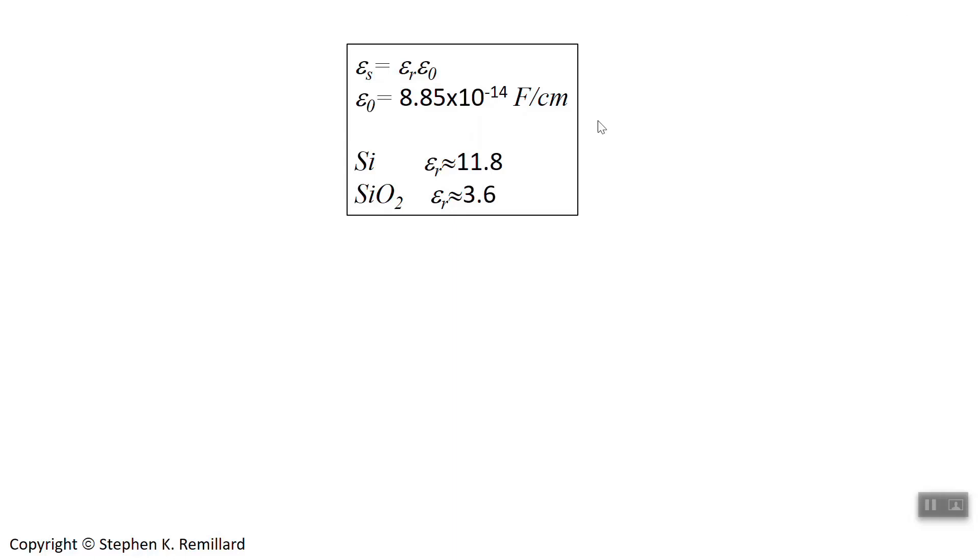For silicon, the dielectric constant is 11.8. For silicon dioxide, which we'll also use a lot because silicon dioxide is the common insulating layer that is placed on top of silicon in MOSFETs, the dielectric constant is 3.6 for silicon dioxide. Write those numbers down. Put them on the inside cover of your textbook, but put them someplace where you're going to look quickly and easily and find it to be very convenient.